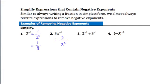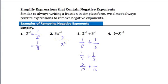Example 3 has two negative exponents. Write each without a negative exponent: 2 to the negative second becomes 1 over 2 squared, and 3 to the negative first becomes 1 over 3. Squaring the 2 gives 1 fourth plus 1 third. Adding these fractions with a common denominator of 12: 1 fourth becomes 3 twelfths, 1 third becomes 4 twelfths, giving a final answer of 7 twelfths.